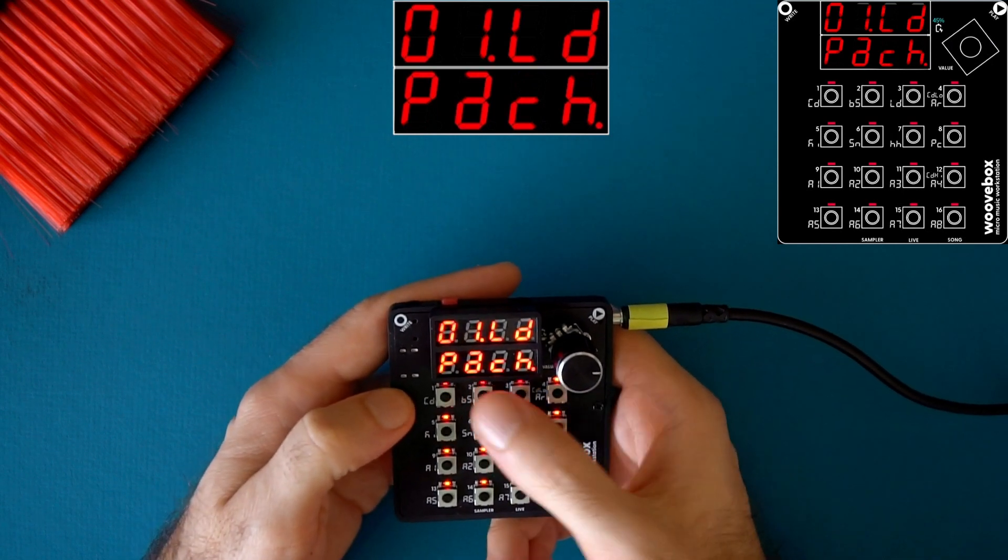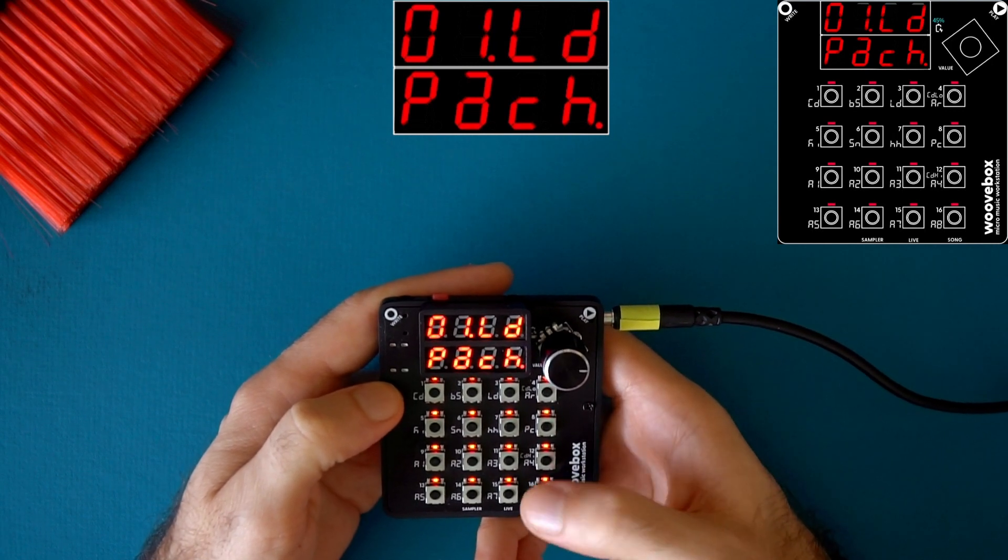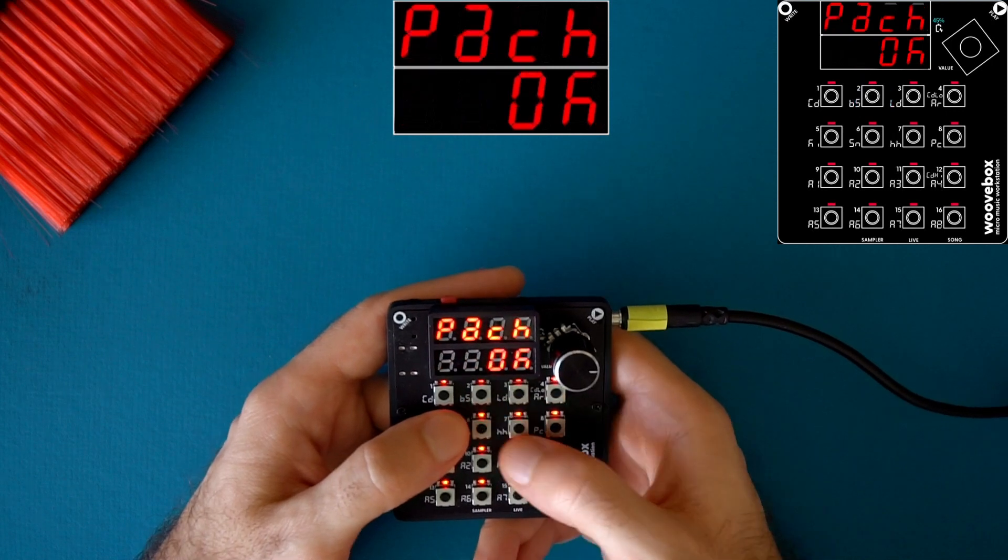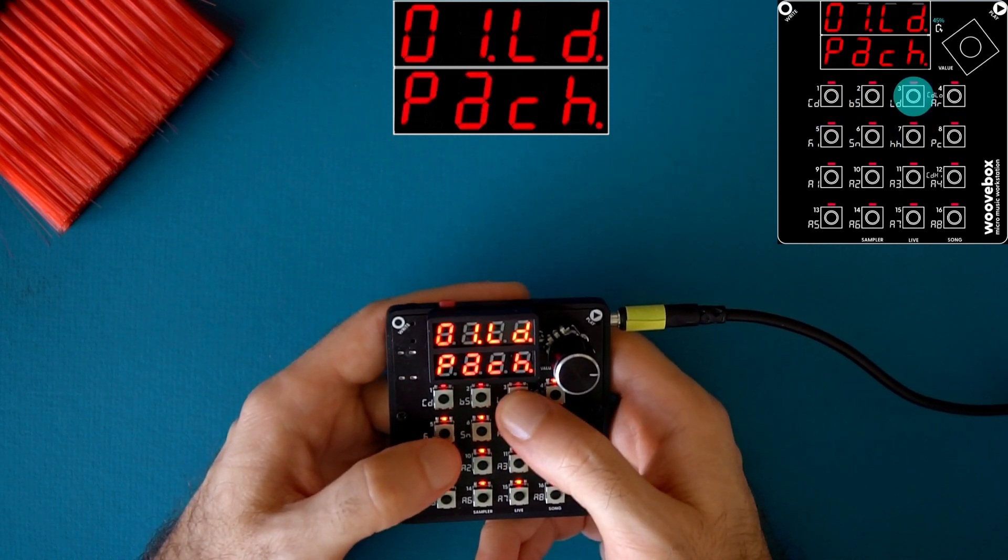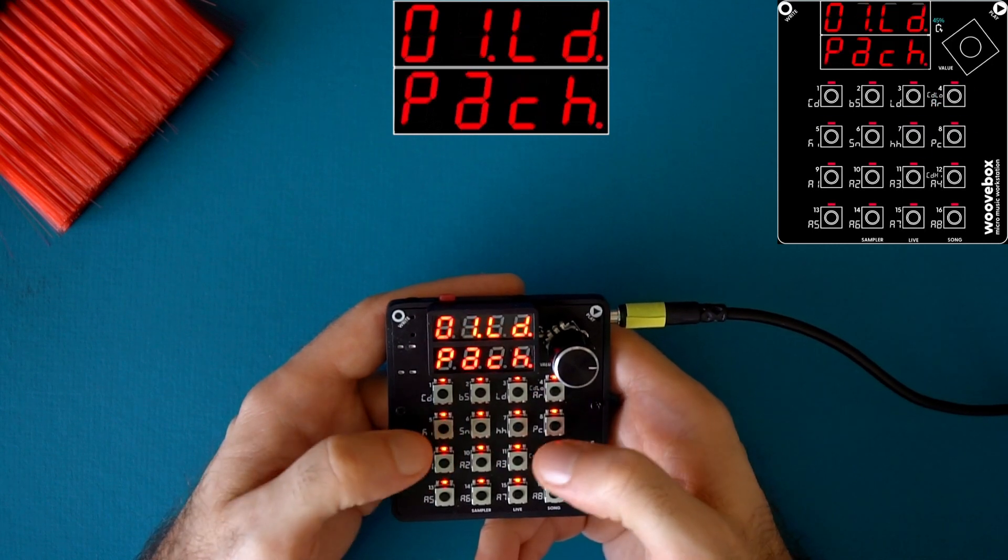The way this works is each key that is lit is a preset, except for key 16. And to select a preset, you just press and hold. There you go.